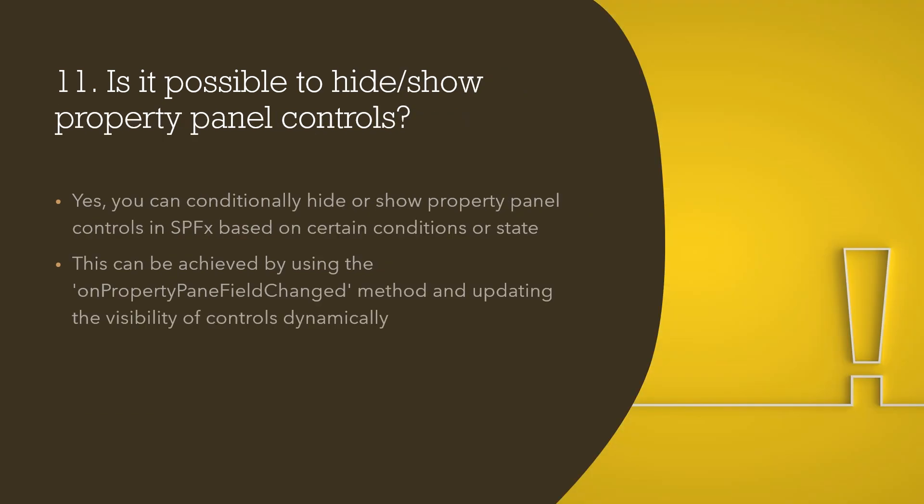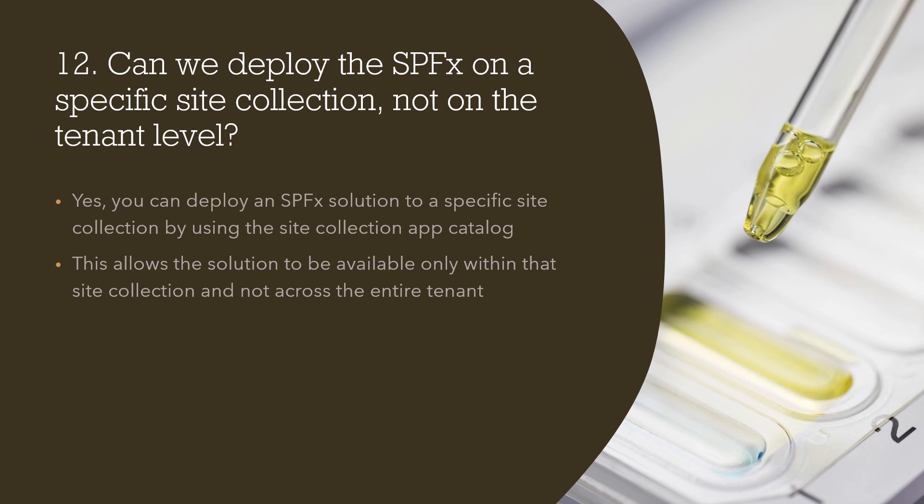Question number eleven: is it possible to hide property panel controls? Yes, you can conditionally hide property panel controls in SPFX based on certain conditions or state. This can be achieved by using the onPropertyPaneFieldChanged method and updating the visibility of controls. For example, to hide a dropdown based on the selection of a toggle button, we check the toggle button's state in that method and add a condition accordingly.